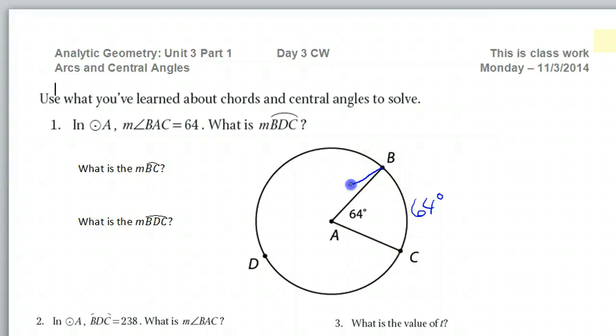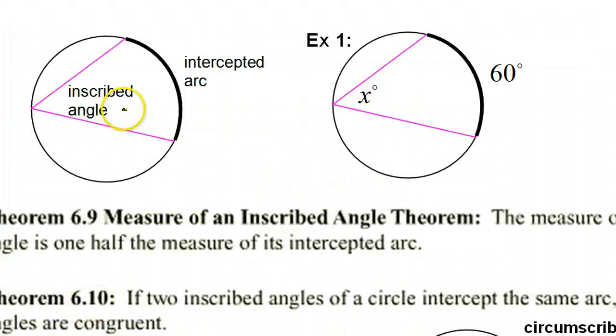But if I had an inscribed angle that had the same intercepted arc, the inscribed angle is narrower. In fact, it's going to be half as big. So if the arc is 64 degrees, guess how big the angle will be? 32.